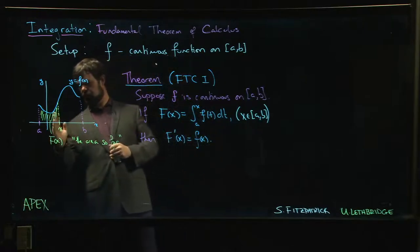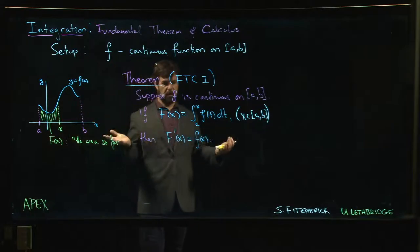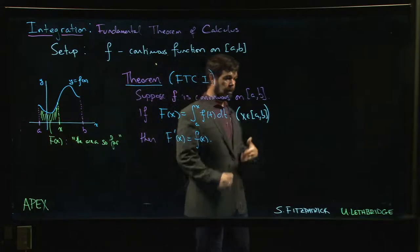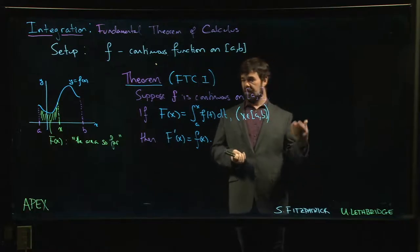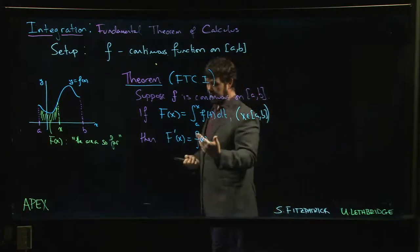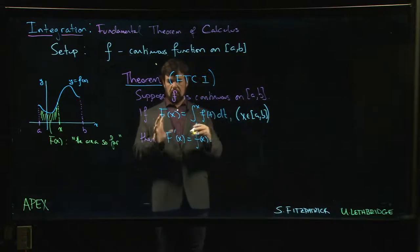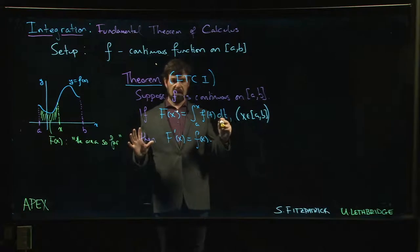When the upper and lower limits are the same, you don't have any area. If you slide x all the way down to a, there's no base for your region, so you have no area. So you actually know which among the family of all possible anti-derivatives it is — it's the one where the constant is chosen to make F of a equal to zero.